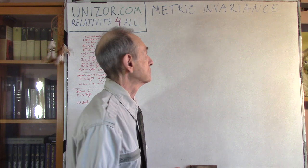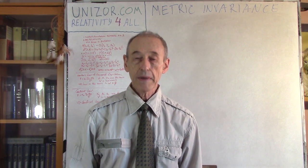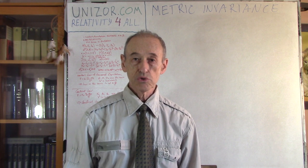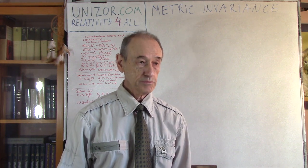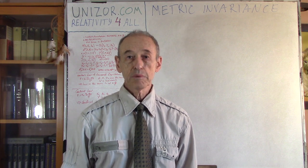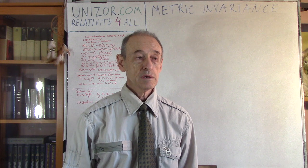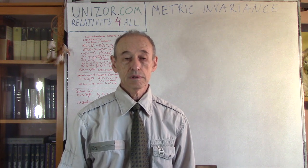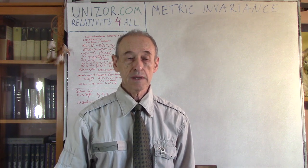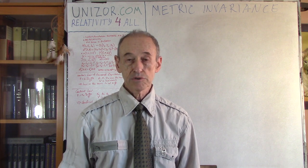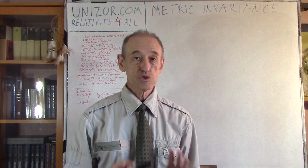So what about metric invariance? How do we measure the distance between two different points in our space? We are talking about two different reference frames, both inertial. Any reference frame we are considering right now uses Cartesian coordinates, and we are assuming that our space is Euclidean.